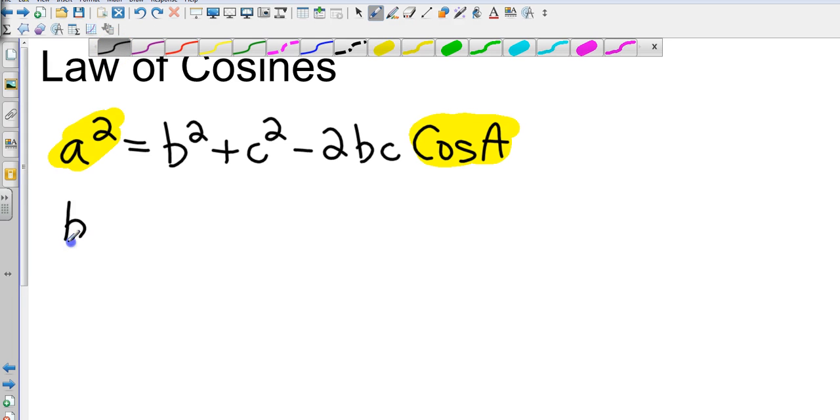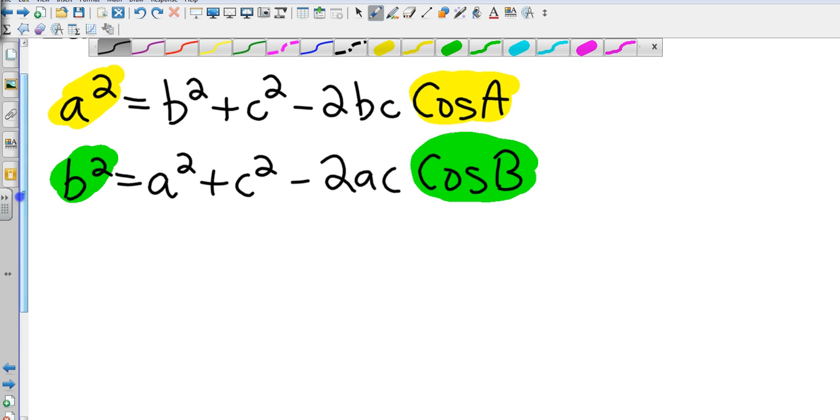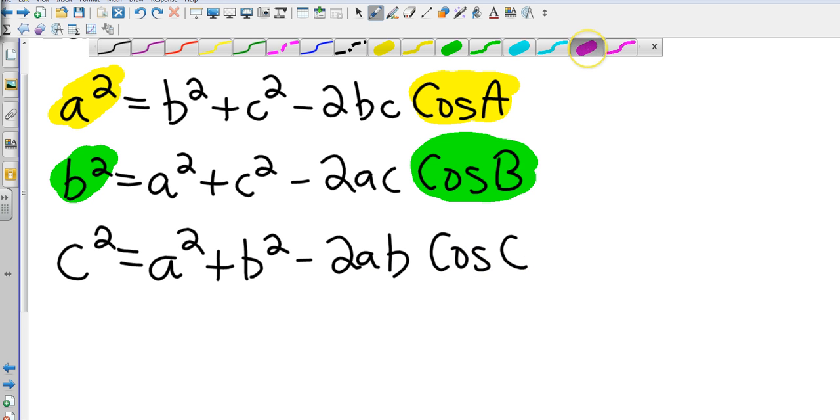So what if I was finding side b? In this case, if I'm finding side b, then I'm finding the cosine of angle b. And you can probably see where I'm going with this, so the next one is going to be c.